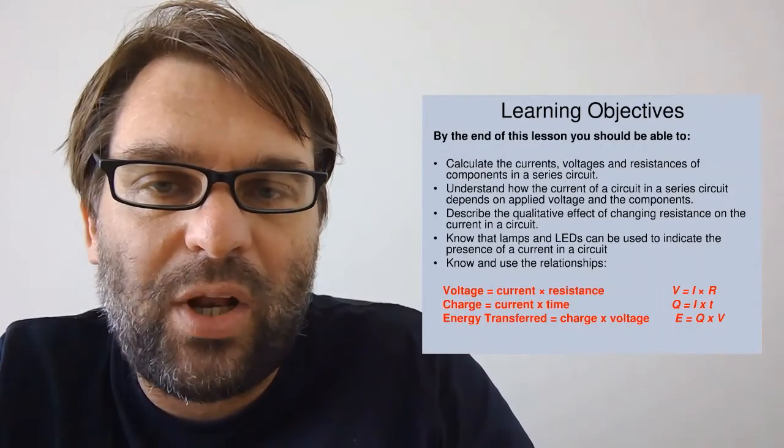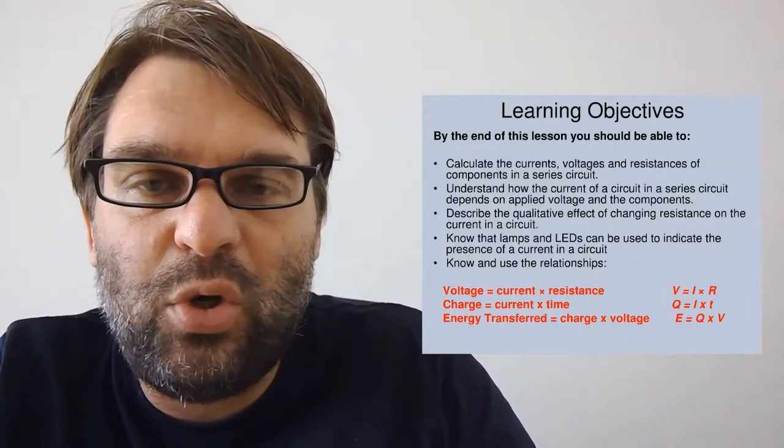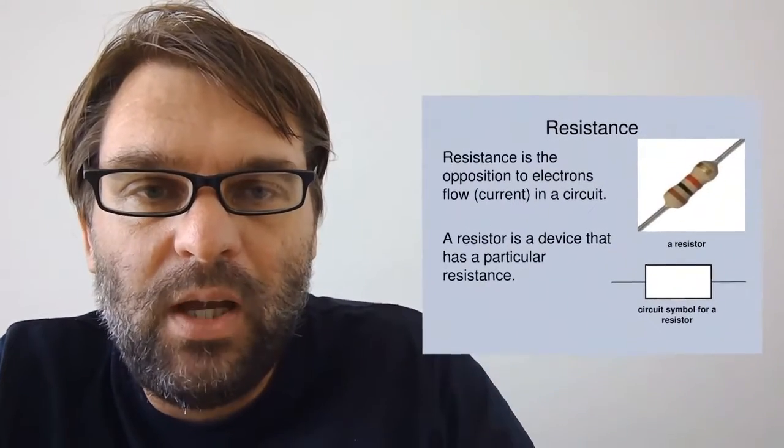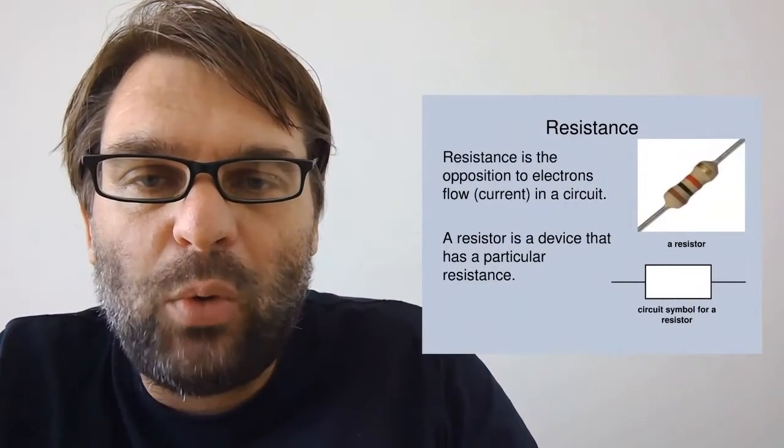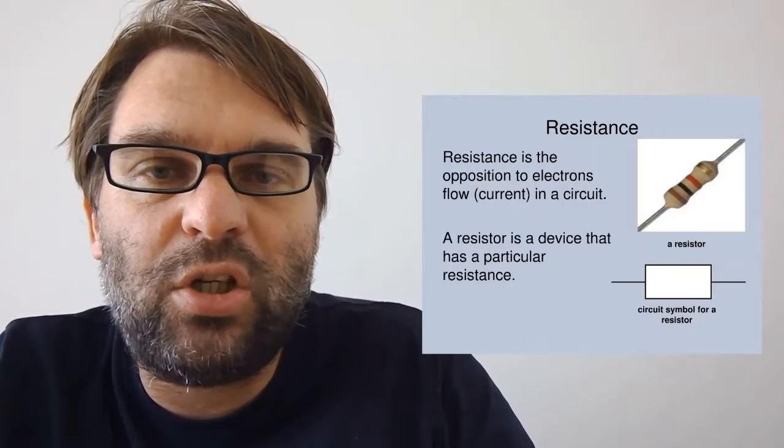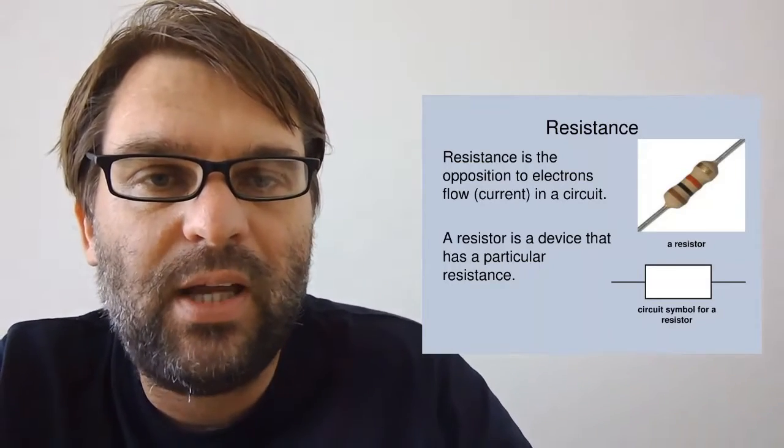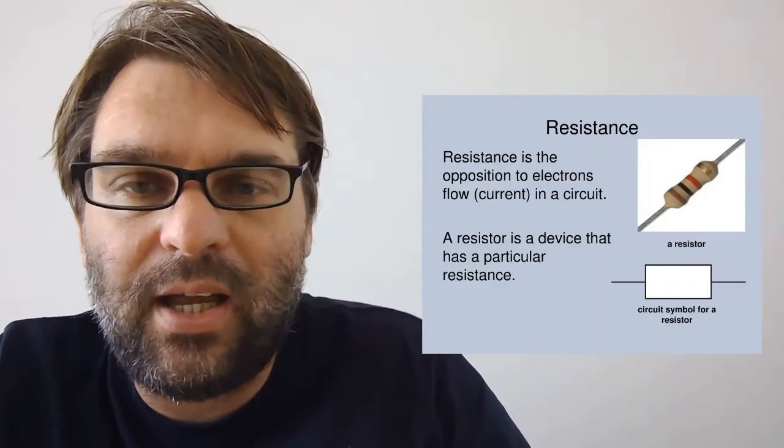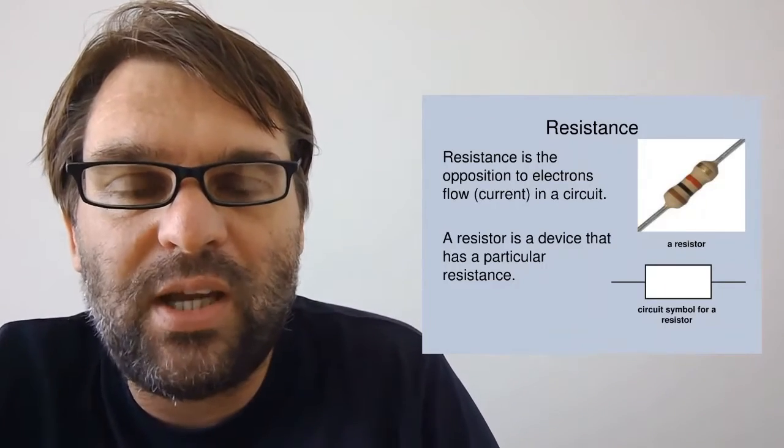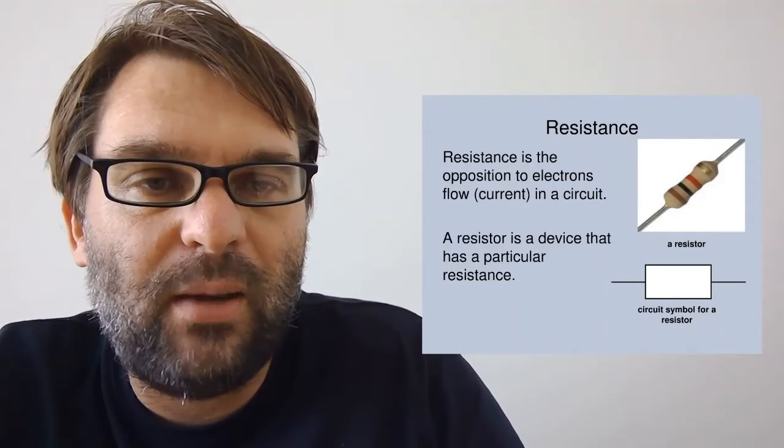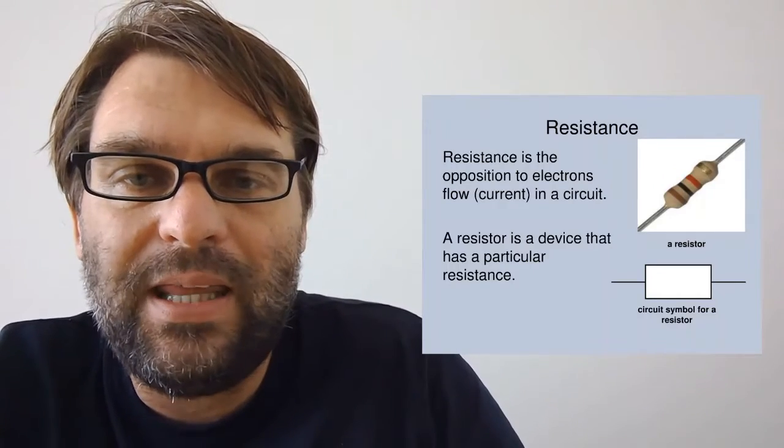So what is resistance? Resistance is essentially the opposition to current in a circuit that slows down the current. A resistor is the device that we use in a circuit to slow down the current, and that is the appropriate circuit symbol there.